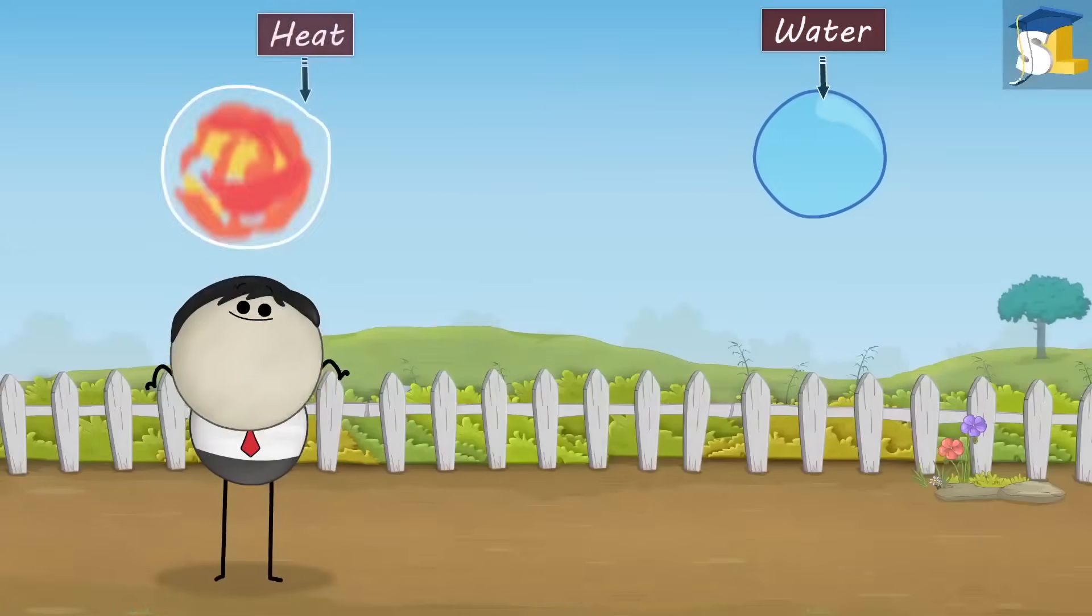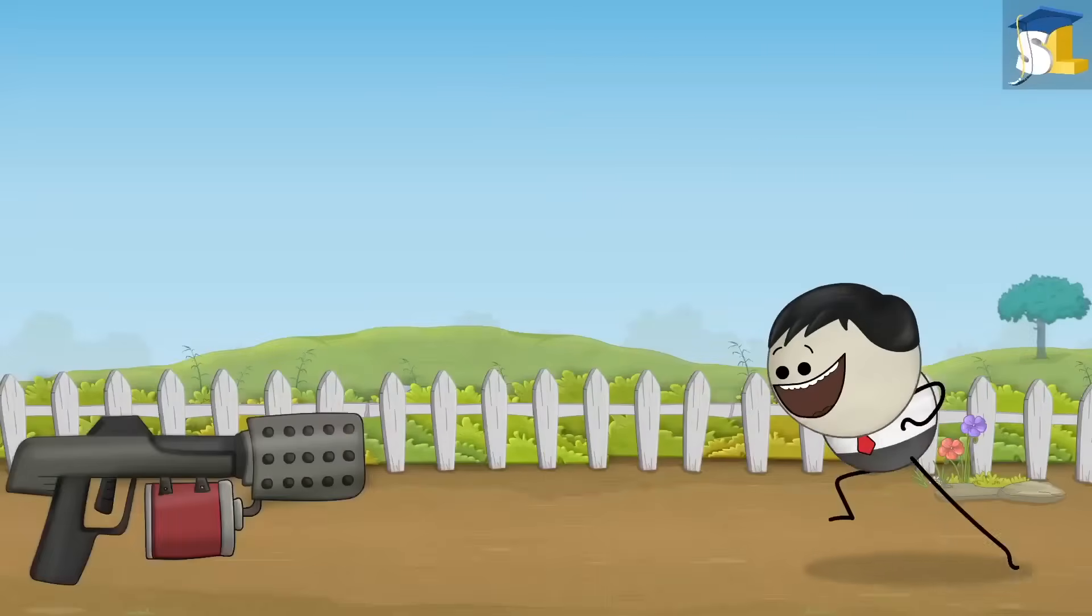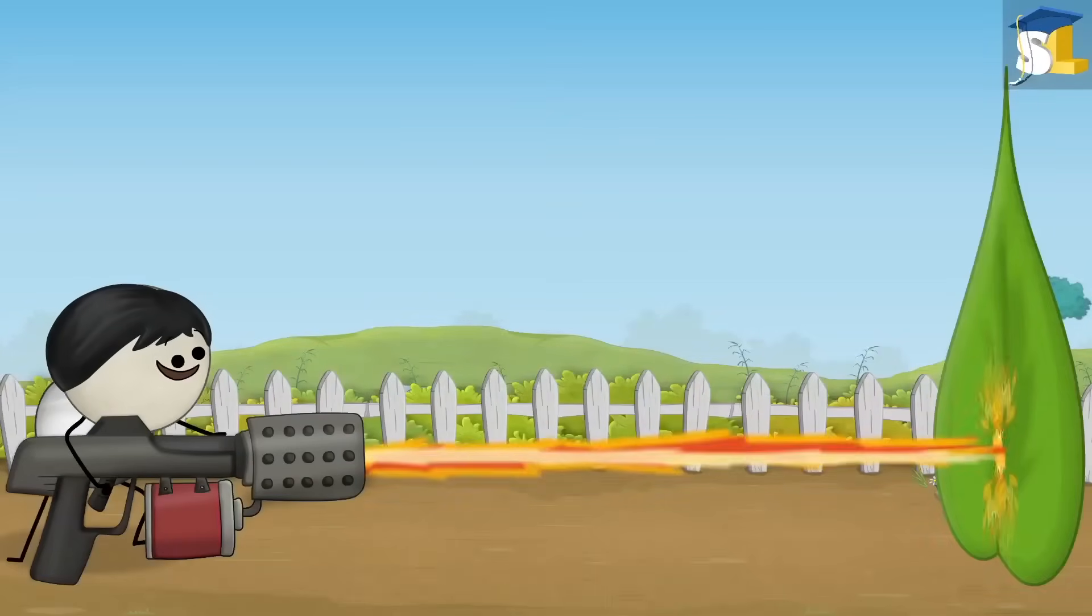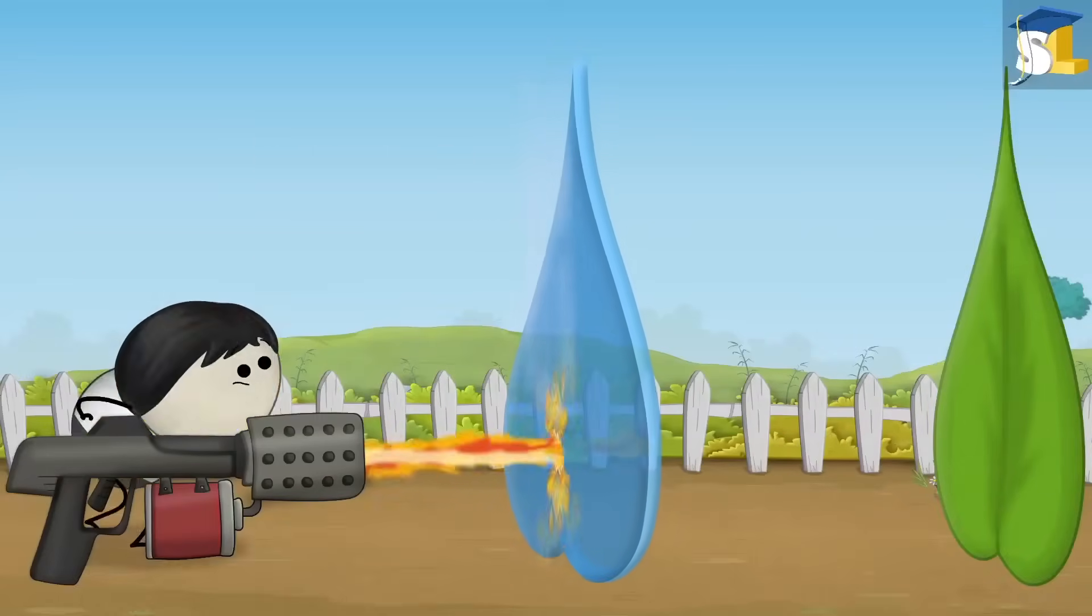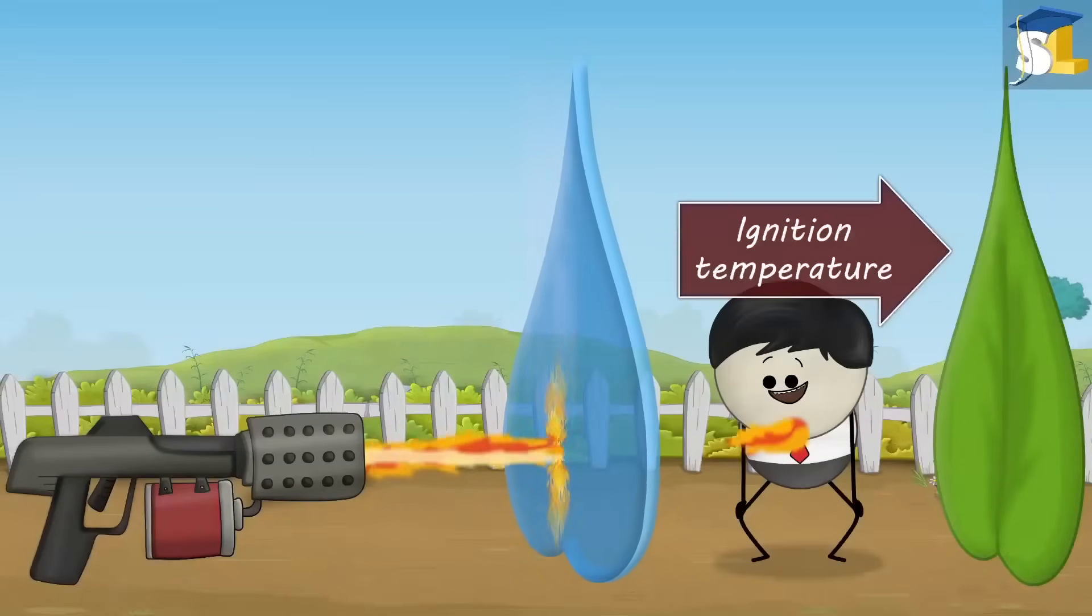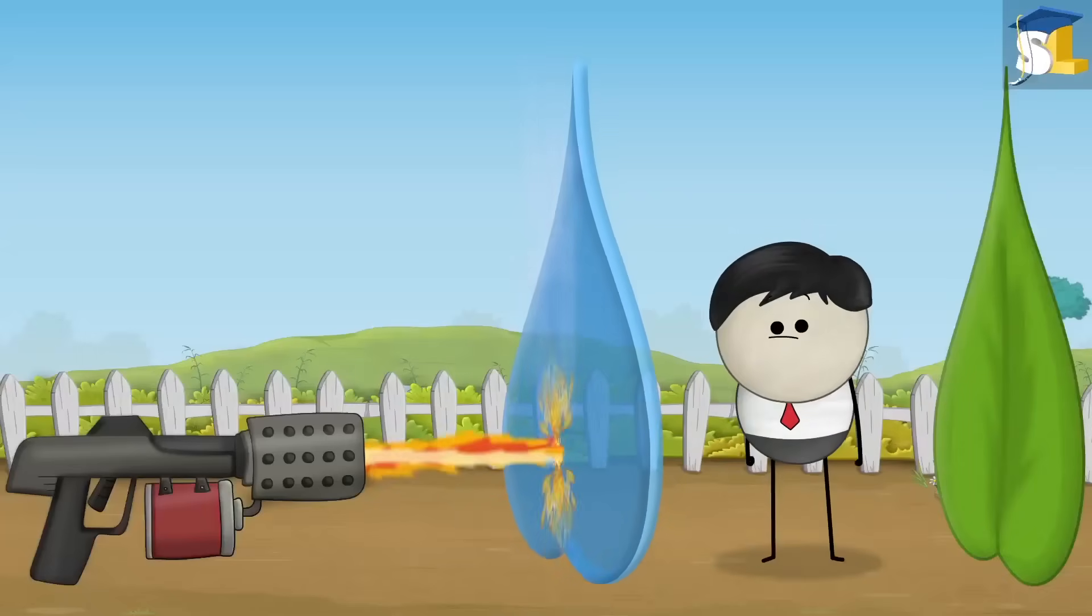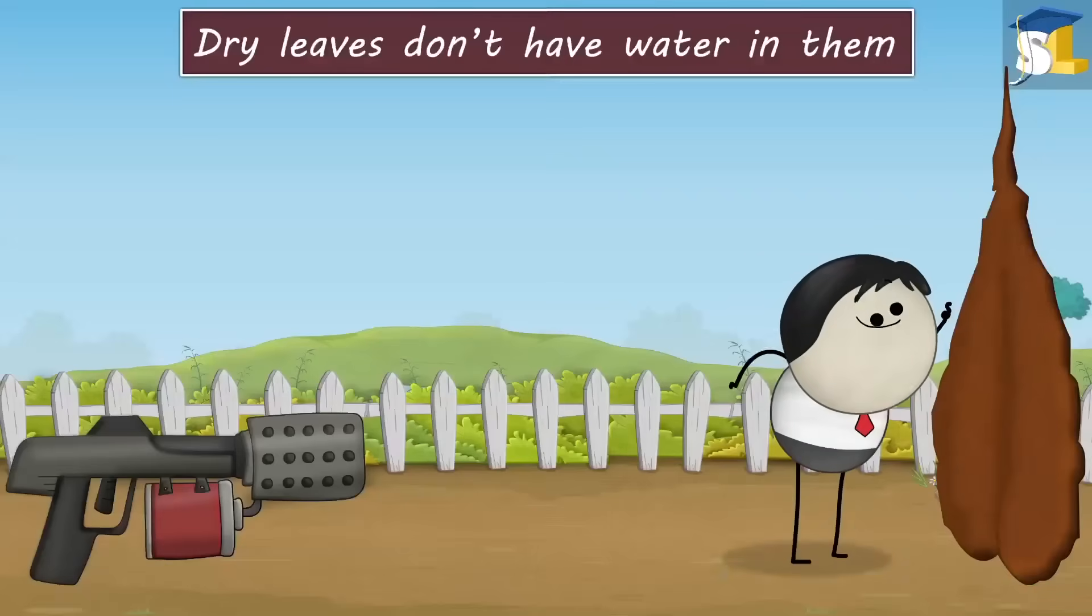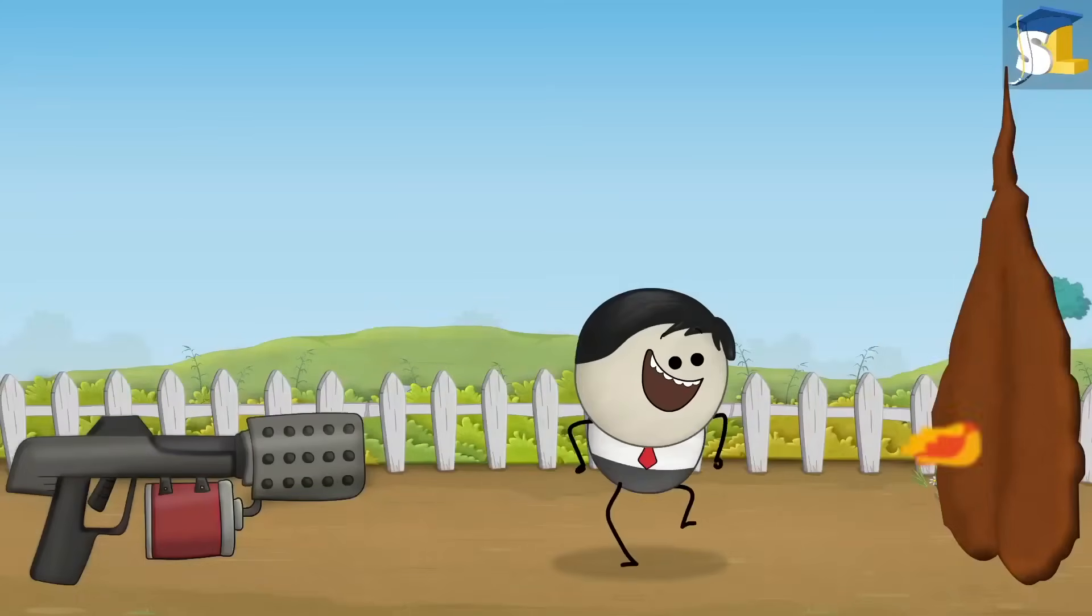Water has a property of absorbing a huge amount of heat before evaporating. Hence, when we try to burn green leaves, a large amount of heat is required to first evaporate the water and then to reach the ignition temperature of leaves, thus not allowing the leaves to catch fire easily. However, dry leaves don't have water in them. Hence, they don't need much heat, making them burn easily.